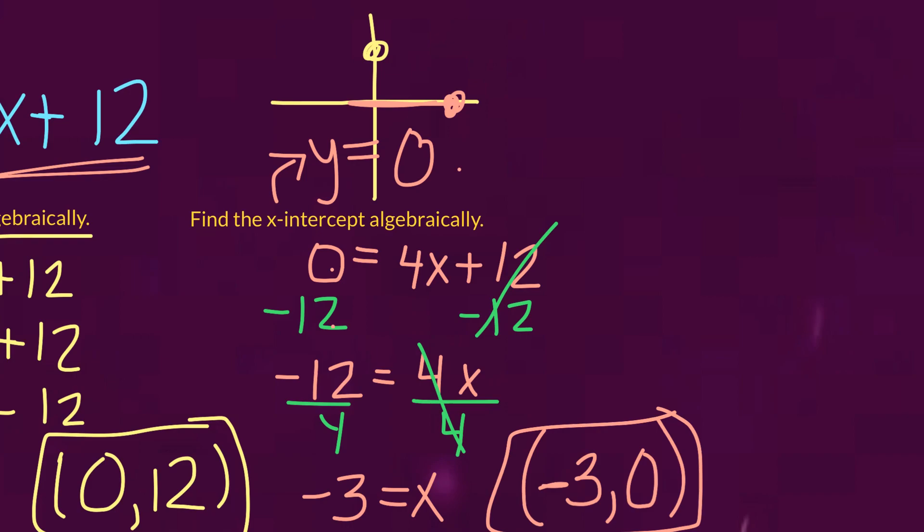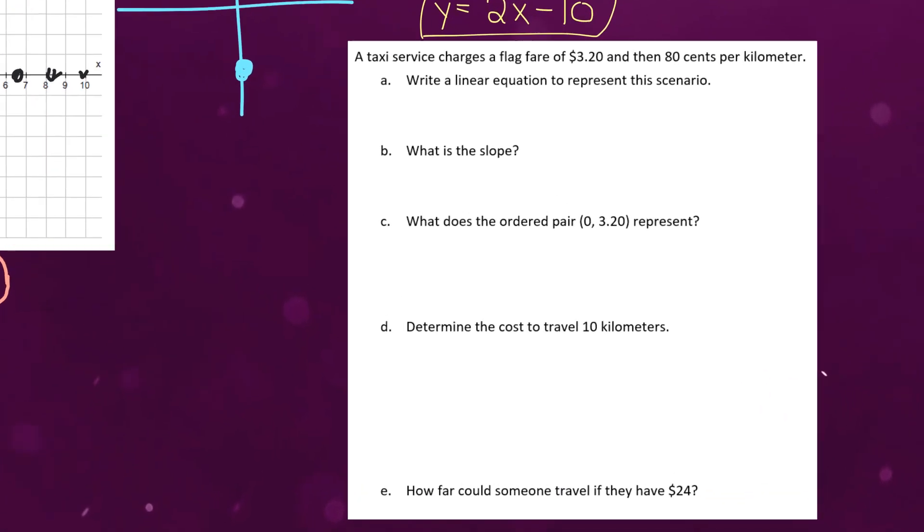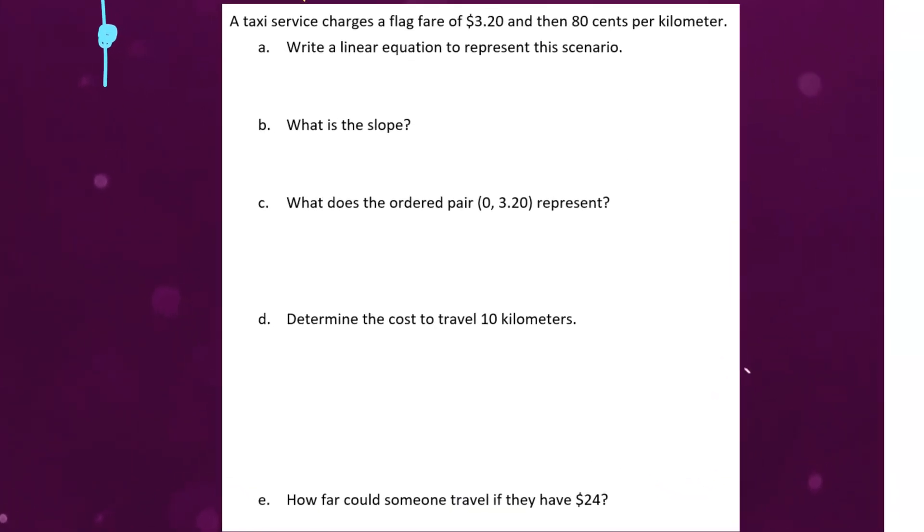Okay, so for the rest of this video, I'm going to be going over an example of a word problem where you can utilize these skills to help you solve real-life problems. So, this question here, you've got a taxi service that charges a flag fare of $3.20 and then $0.80 per kilometer driven. First part is to write a linear equation to represent this scenario.